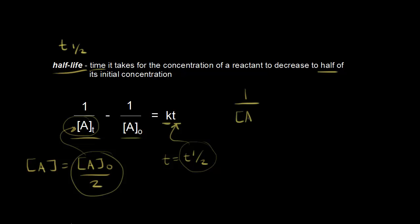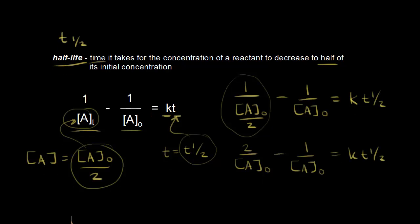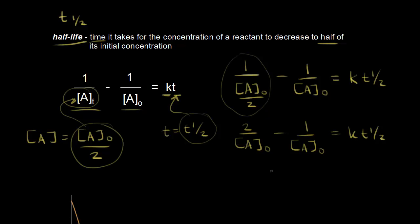We have one over the initial concentration of A divided by two, minus one over the initial concentration of A, is equal to the rate constant K times the half-life. On the left side, this would be two over the initial concentration of A minus one over the initial concentration of A equals KT½. That gives us one over the initial concentration of A equals K times the half-life.